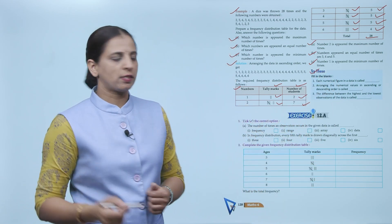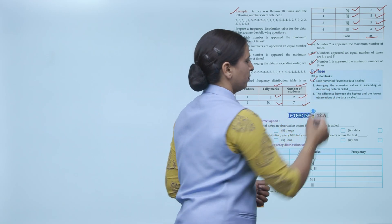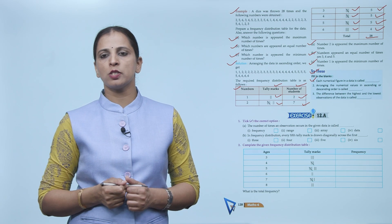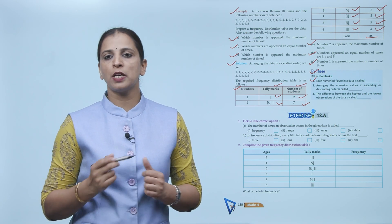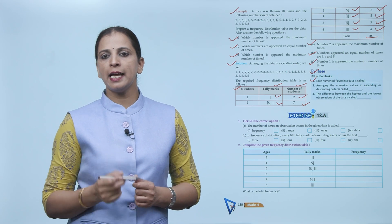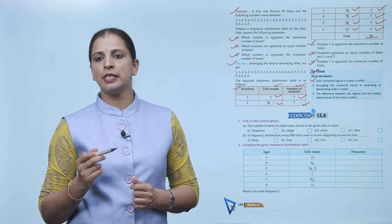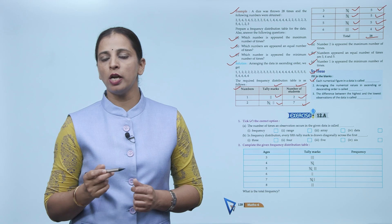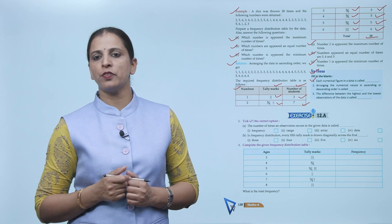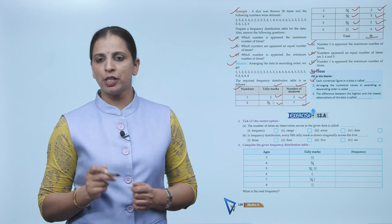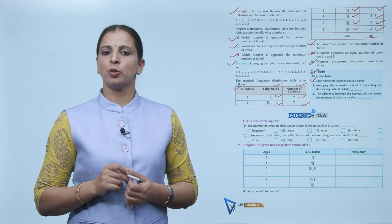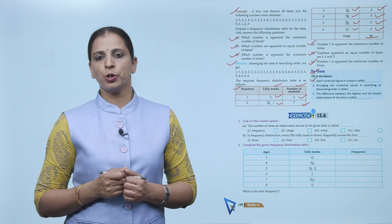Try these — fill in the blanks: First, each numerical figure in a data is called an observation. Second, arranging the numerical values in ascending or descending order is called an array. Third, the difference between the highest and the lowest observation of the data is called range. Try the exercise questions on your own.